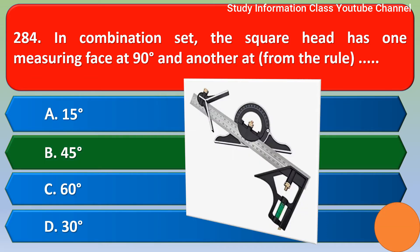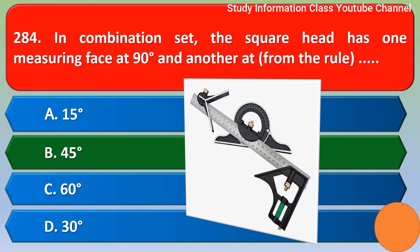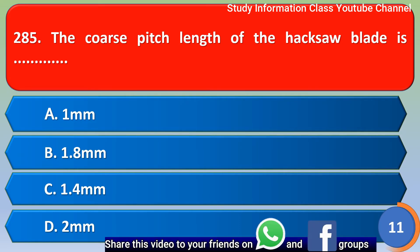The coarse pitch length of the hacksaw blade is: Option A, 1mm; Option B, 1.8mm; Option C, 1.4mm; Option D, 2mm. Option B, 1.8mm, is the right answer.